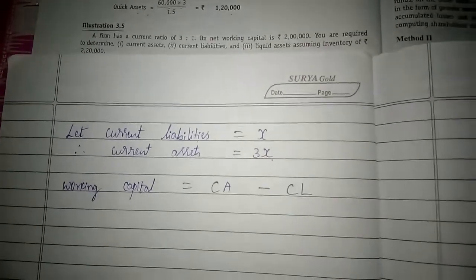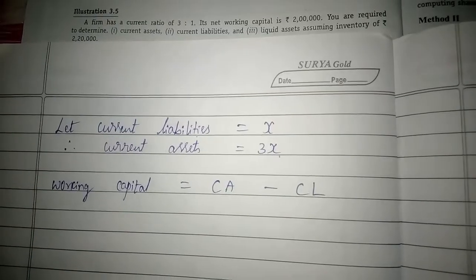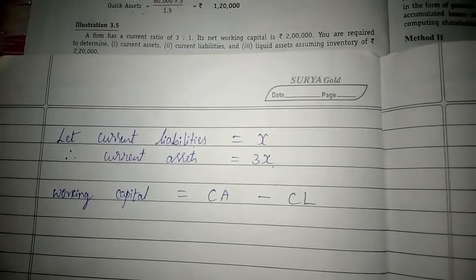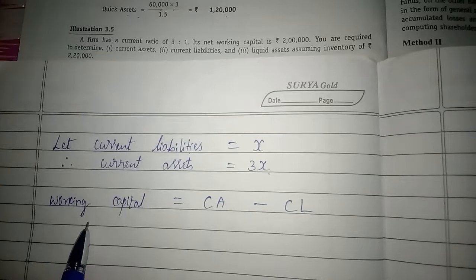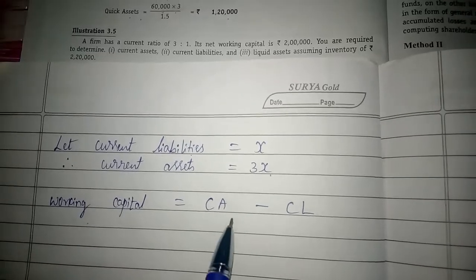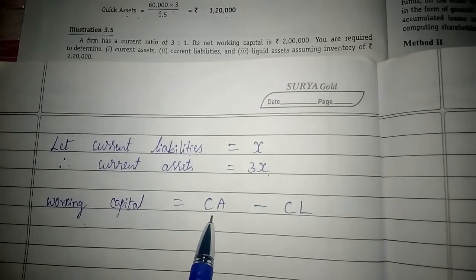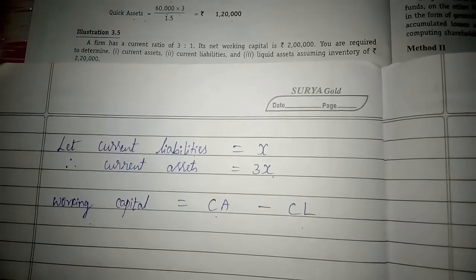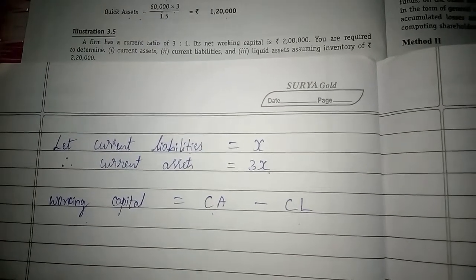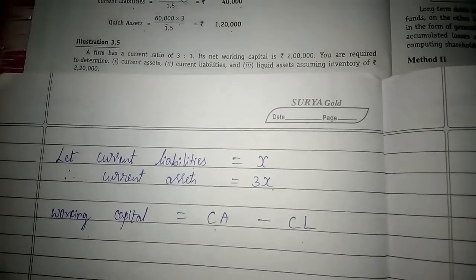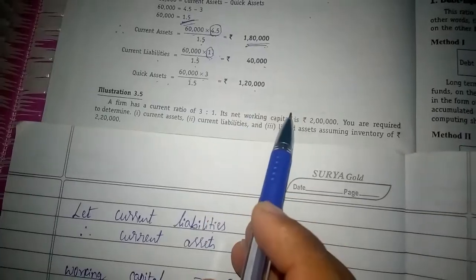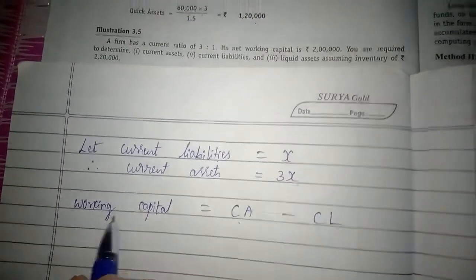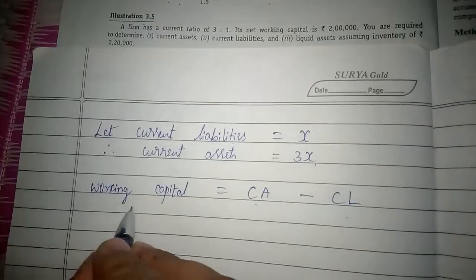The working capital is the difference between current assets and current liabilities. They have given the working capital information but not the individual values of current assets and current liabilities, so we need to find those values using the given information. Net working capital is 2 lakh rupees.